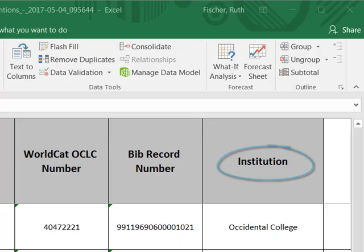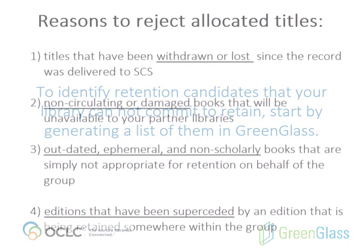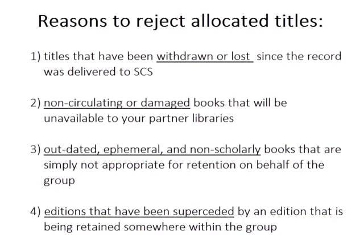If your library wishes to reject retention responsibility for specific titles, you may do so. There are several reasons that allocated retentions may be rejected by participant libraries. These include titles that have been withdrawn, have been lost, or have gone missing since your extract was delivered to SCS, as well as non-circulating or damaged books that will be unavailable to your partner libraries.